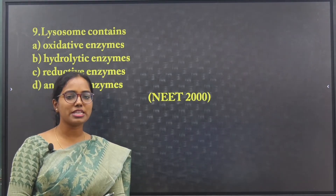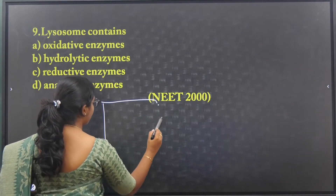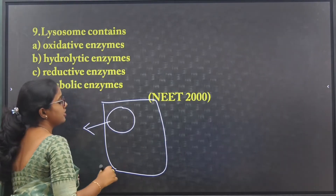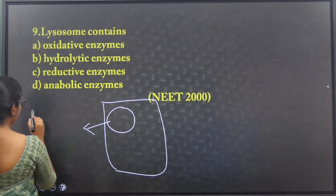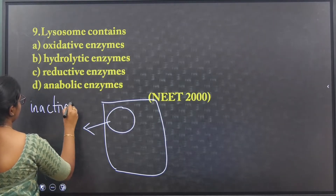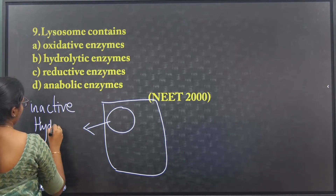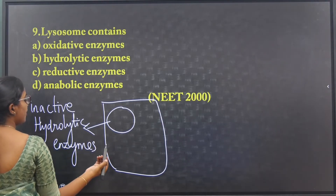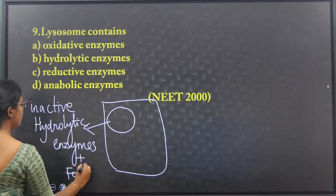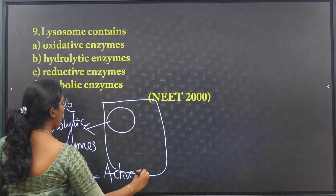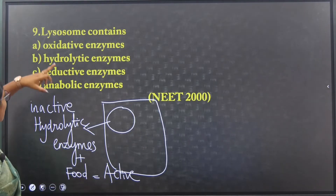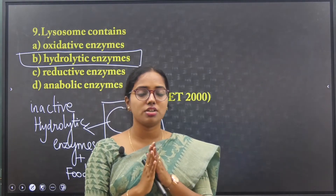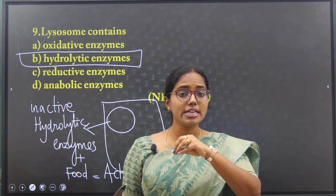What is lysosome? Lysosome is like a dustbin inside the cell. Lysosomes possess inactive hydrolytic enzymes — these are called primary lysosomes. When lysosomes meet food particles, the enzymes become active. Lysosomes contain hydrolytic enzymes for digestion of whatever material is engulfed.